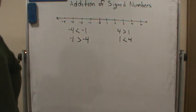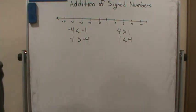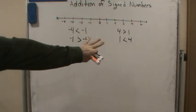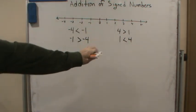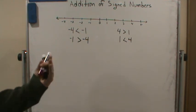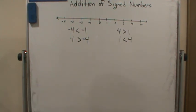Next, we'll start talking about adding signed values. This is all going to be based on what we're learning here on the number line and the fact that certain numbers are greater than or less than other numbers.